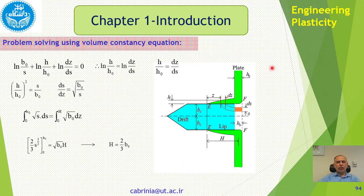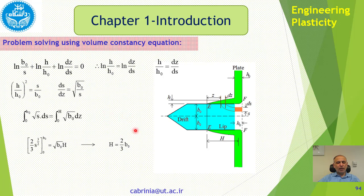Integrating from S = 0 to S = B0 on one side and from 0 to H on the other — integrating √S dS and simplifying — we get H = (2/3)·B0. This result was obtained in minutes using only volume constancy. A finite element solution of this problem would require hours of modeling, boundary condition setup, and computation — demonstrating the power of engineering plasticity.